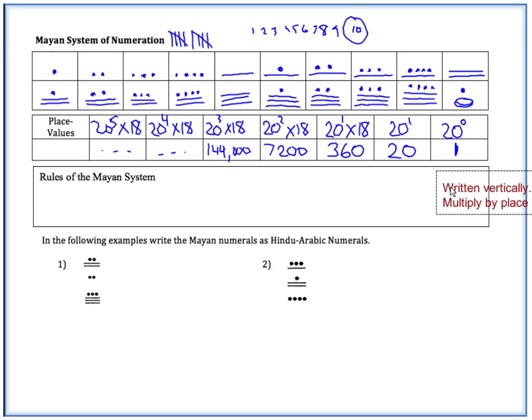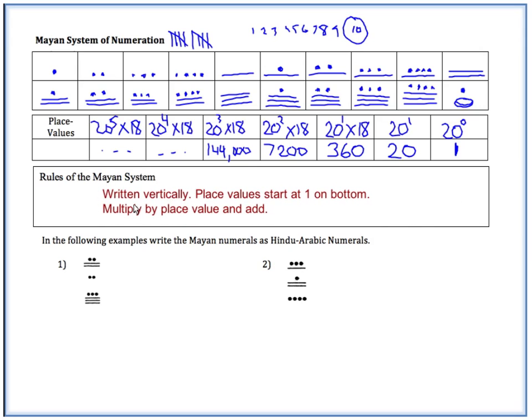Now the rules of the Mayan system. Their numbers were actually written vertically. And their place values start at 1 on the bottom. And then they go up. So you want to multiply by the place value and then add. So here is a vertically written Mayan numeral. And we want to translate this into Hindu-Arabic. So you can see here, we basically have three groupings. Or three different numbers. And all of their numerals are going to be represented with these digits right here. So all you have to do is match up this one. Well, that is 5 times 3 plus 3. So that's 18. This one right here is 2. This one right here is 12. Now, starting at the bottom, this is going to be our 1's place value. So times 1. Our next one is going to be our 20's place value. So times 20. And our next one is going to be our 360's place value. So times 360.